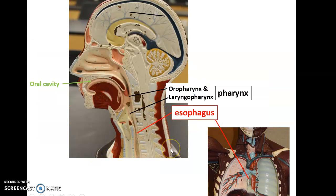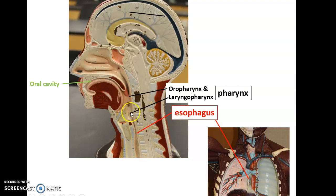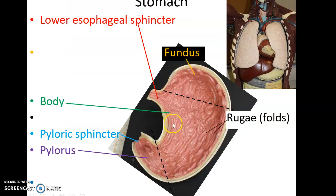The oral cavity leads to the pharynx. The digestive system only uses the oral pharynx and the laryngopharynx — we do not want food going up into the nasopharynx. So the path is: oral cavity → oral pharynx → laryngopharynx → esophagus. The esophagus is a long tube that goes down the neck, through the thoracic cavity, and then reaches the stomach.